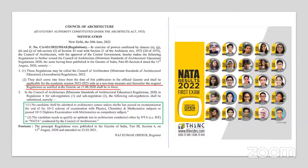So in summary, the major changes are: first, they have removed the 50% criteria — you only need to pass the 10+2 examination with Physics, Chemistry, and Mathematics as compulsory subjects. If you are a diploma student, you just need to study Mathematics as a compulsory subject and pass the examination. Second, candidates need to qualify an aptitude test in architecture conducted either by NTA through the JEE examination or NATA conducted by the Council of Architecture.